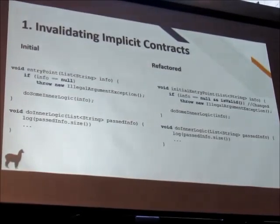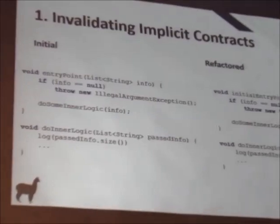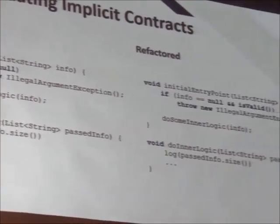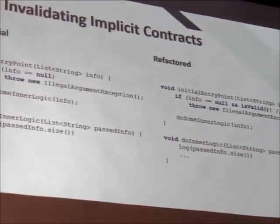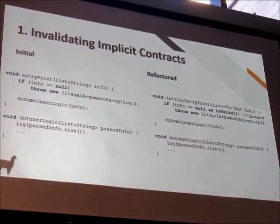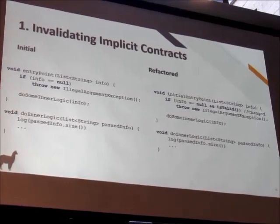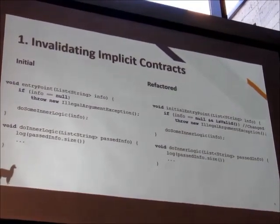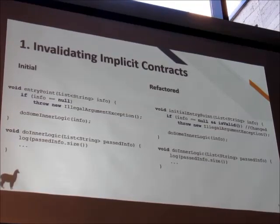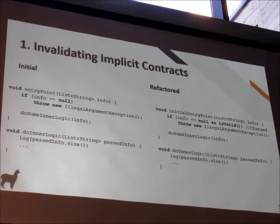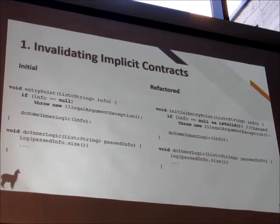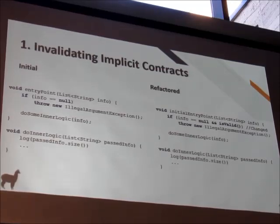A common null issue, especially in bigger projects, occurs during refactoring. On the left we have an entry point method that does null checking at the beginning and throws an IllegalArgumentException. We have an inner logic function with an implicit contract that it's never expecting a null value. When we refactor, we've broken that implicit contract without realizing it — we're no longer checking if something's null. So inner logic potentially could receive a null value. That never happens in Kotlin because we're forced to determine whether the method can accept null values or not.